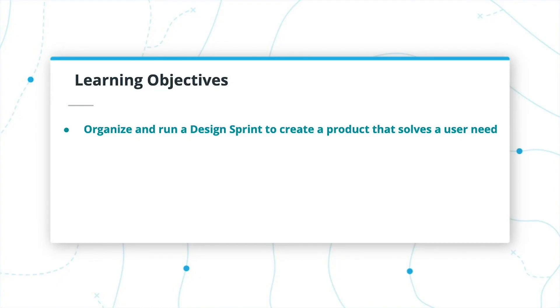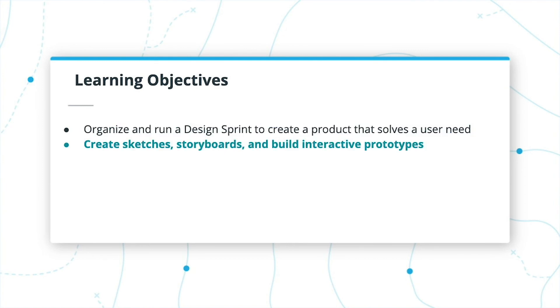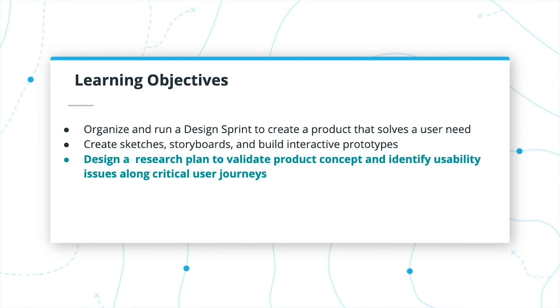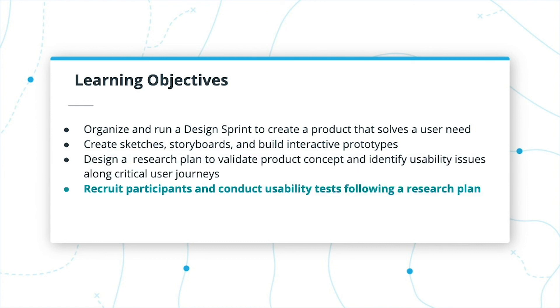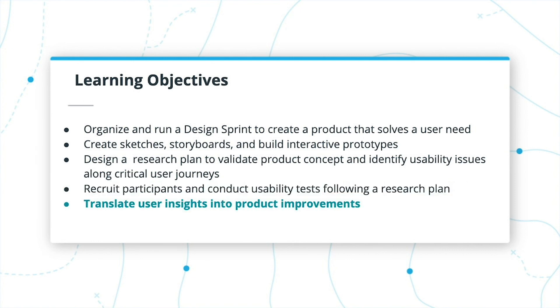Now that you have a high-level understanding of what a Design Sprint is and how it can be used to solve problems, let's walk through the learning objectives for this course. At the end of this course, you will be able to organize and run a Design Sprint to create a product that solves a user need. You'll learn how to create sketches and storyboards, as well as build interactive prototypes. You'll learn how to design a research plan to validate your product concept, as well as identify usability issues along critical user journeys. You'll also learn about how to recruit participants and conduct usability tests following a research plan in order to get insights from your users, and then take those insights and translate them into product improvements.